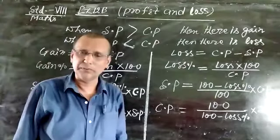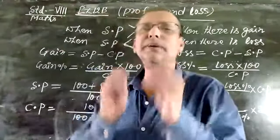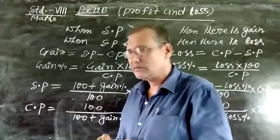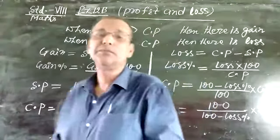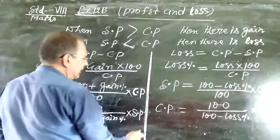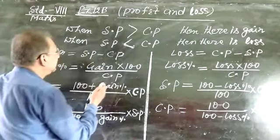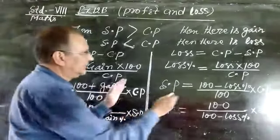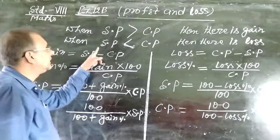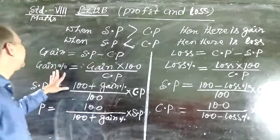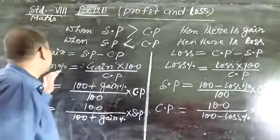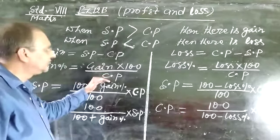So this is very simple to know either it is a case of profit or it is a case of loss — by observing the selling price and cost price we come to the conclusion. Gain is equal to SP minus CP, and gain percent — out of 100 how much we are gaining — so gain percent is equal to gain divided by CP into 100.